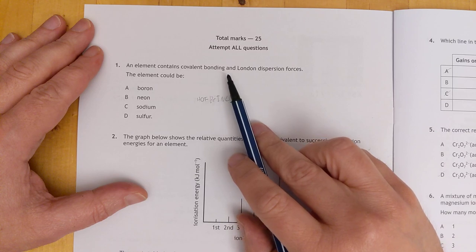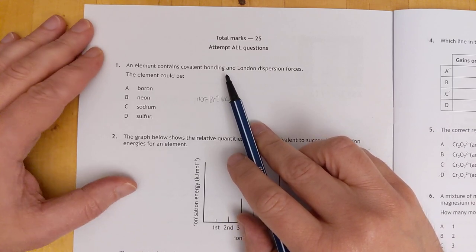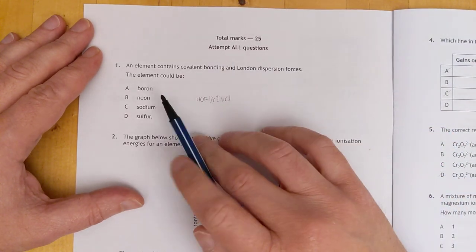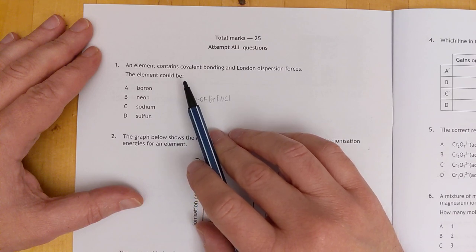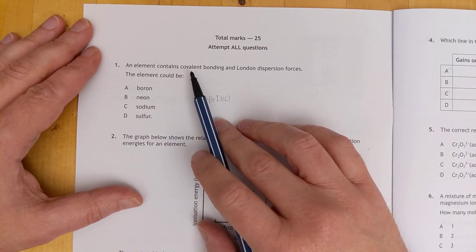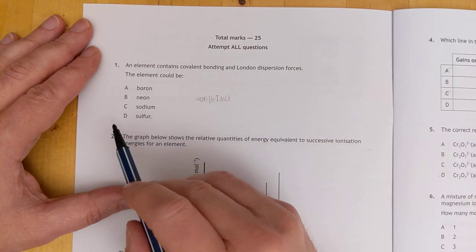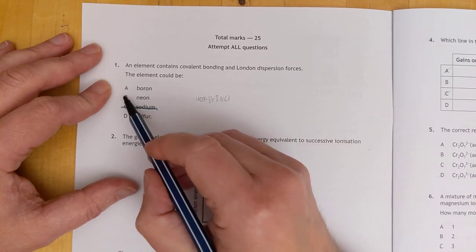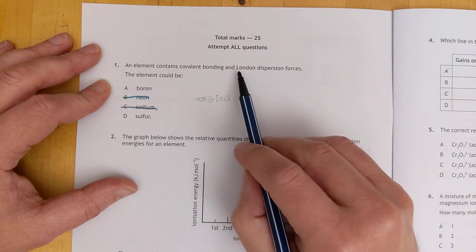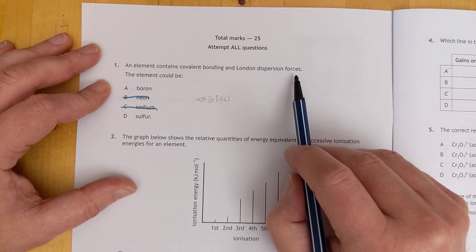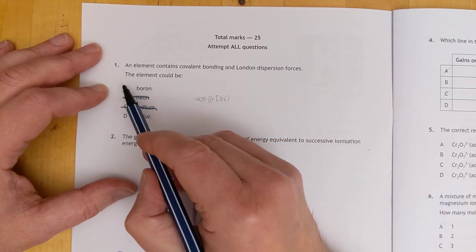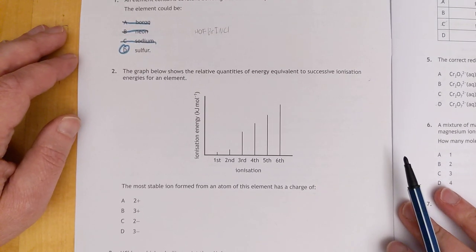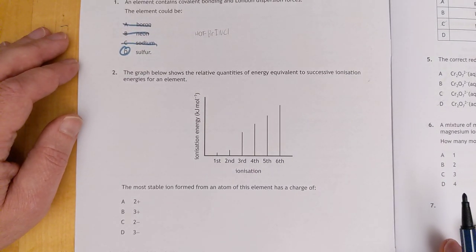An element contains covalent bonding and London dispersion forces. The element could be... It's not a great question, actually. It should have been phrased, when you boil or melt the element, you're breaking covalent bonding or breaking London. We can throw out the metal, sodium's out. If it contains covalent bonding, neon is out. London dispersion forces are classically between molecules, intermolecular. Boron has no molecules, the whole thing is one big giant network. So the answer is D, sulfur. If you're already thinking, oh no, perhaps now's the time to stop.